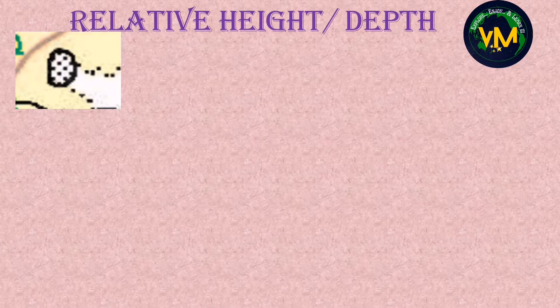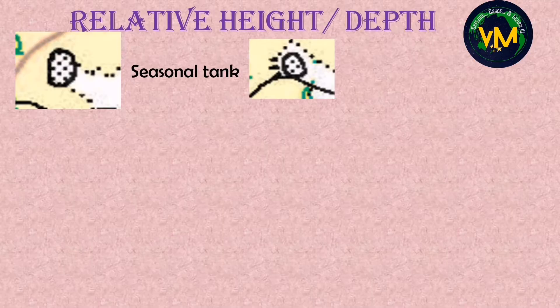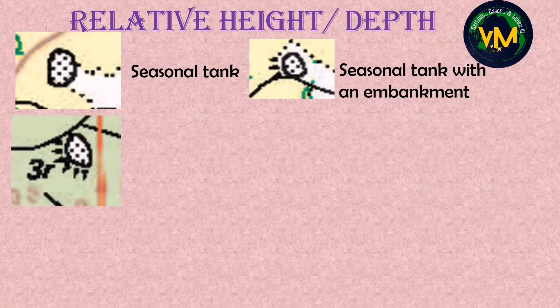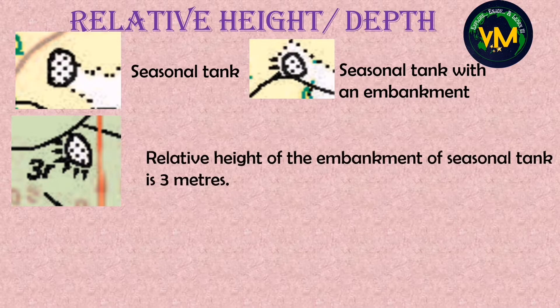In the first picture, a black circle with a black dot indicates a seasonal tank. In the second picture, the seasonal tank has lines around it representing an embankment to control the flow of water from the tank during the rainy season. The 3R is written near the embankment and is black in color. So first write relative height, then the feature — embankment of the seasonal tank — and the height is 3 meters. The answer is: relative height of the embankment of the seasonal tank is 3 meters.